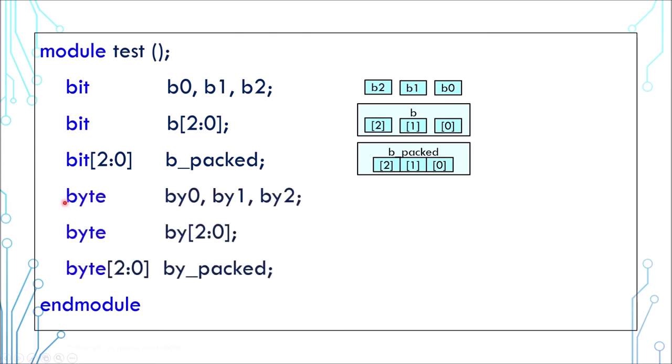The same concept can be applied to other types of variables. The only gotcha is that in this case, byte cannot be packed. Only single bit or vector can be packed. For example, bit, logic, reg and wire.